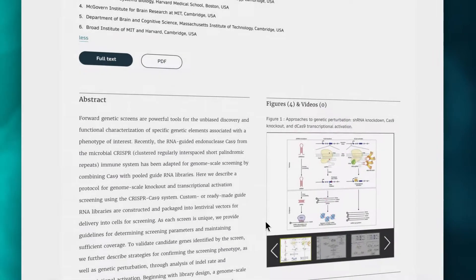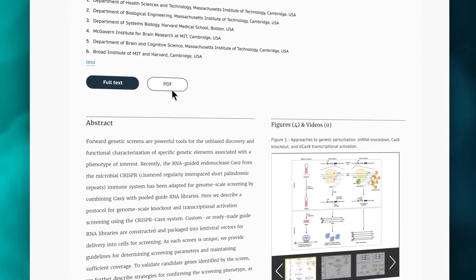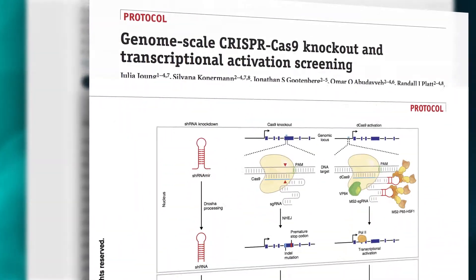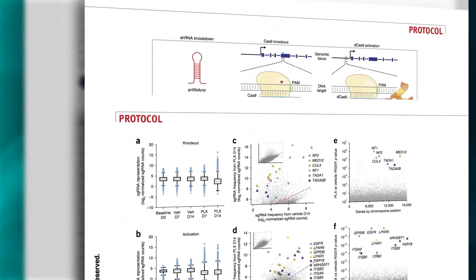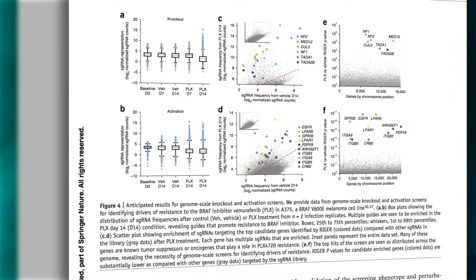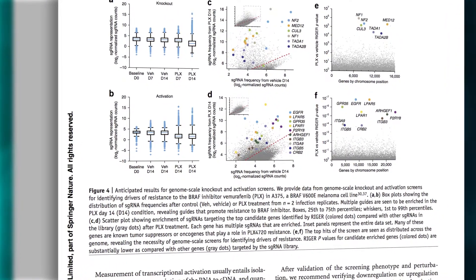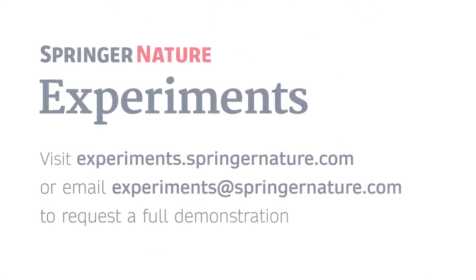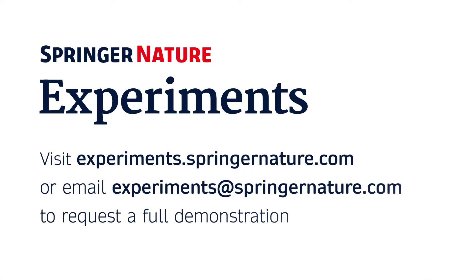Once you have gathered enough insight, click on full text or PDF to access the content of the article on its native source. At that stage, you will need a valid subscription to be able to view content. Get in touch with our team for a more detailed showcase of how Springer Nature Experiments can support your research.